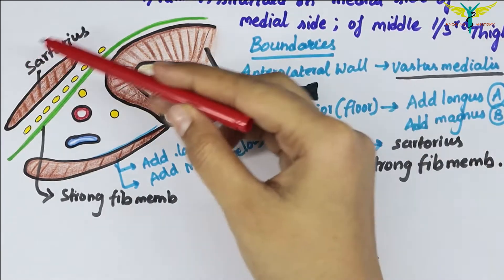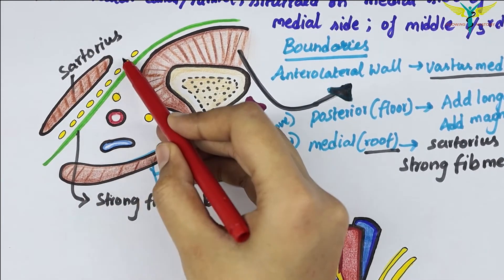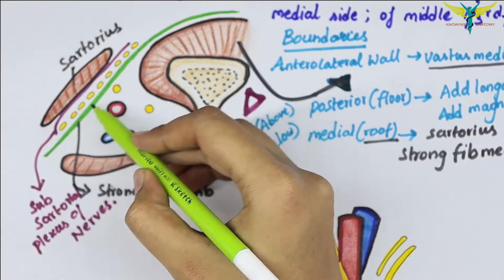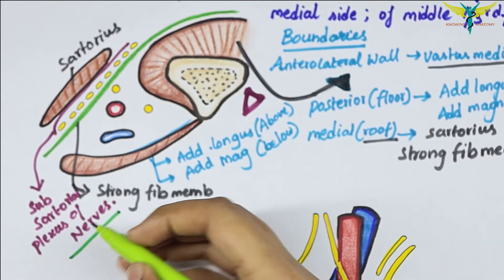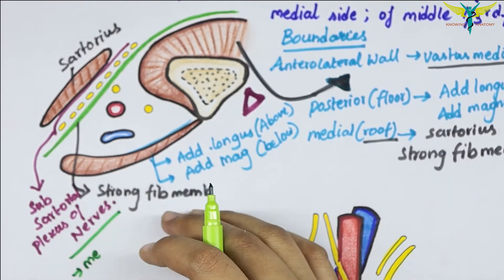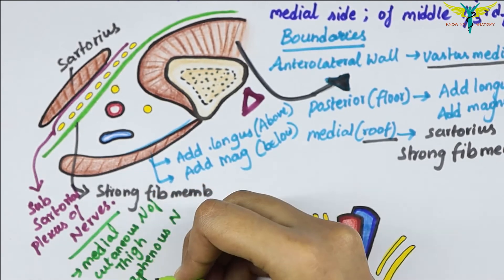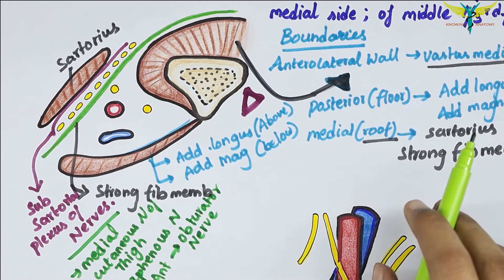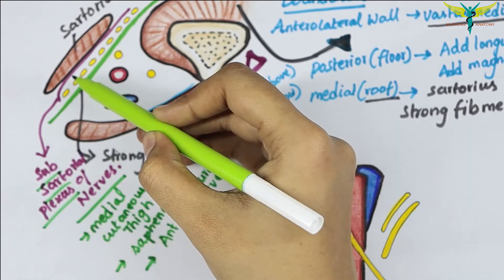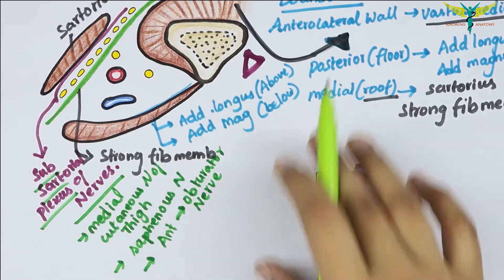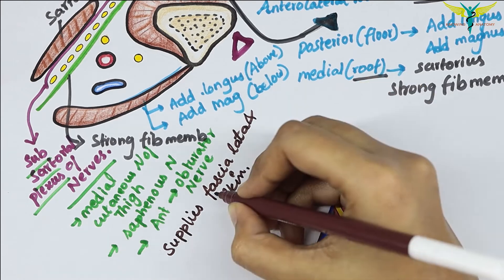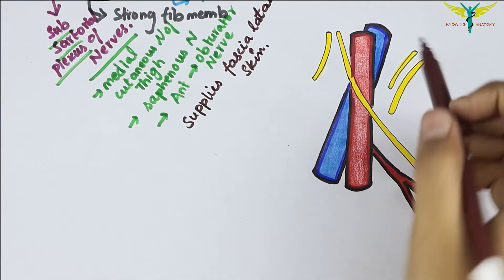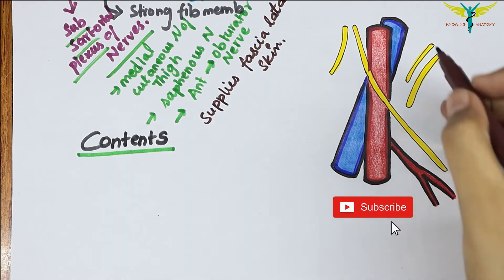The subsartorial plexus of nerves is formed by branches of the medial cutaneous nerve of the thigh, the saphenous nerve, and the anterior division of the obturator nerve. This subsartorial plexus supplies the overlying fascia lata and skin.